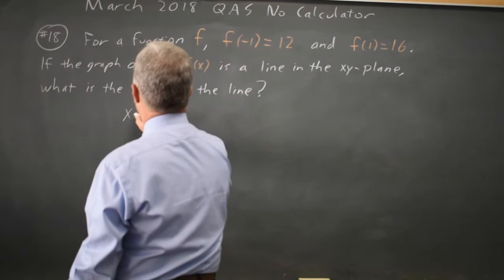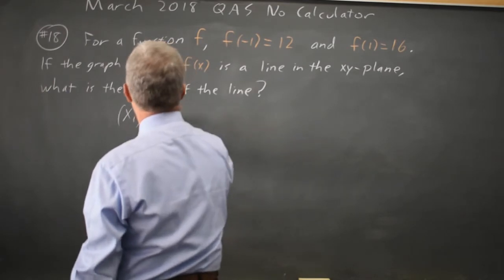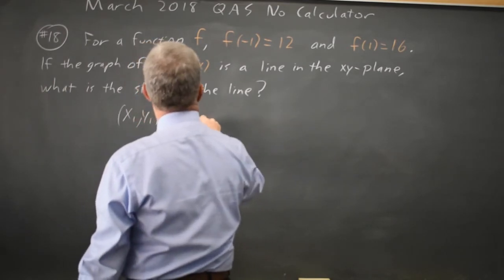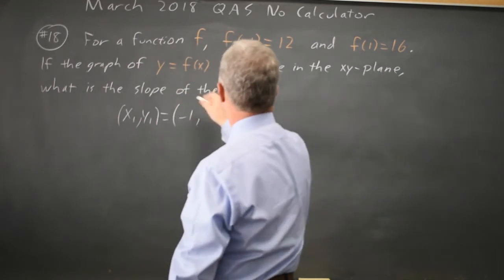We have the first point x₁, y₁: x equals negative 1, when f(x), which is y, equals 12.